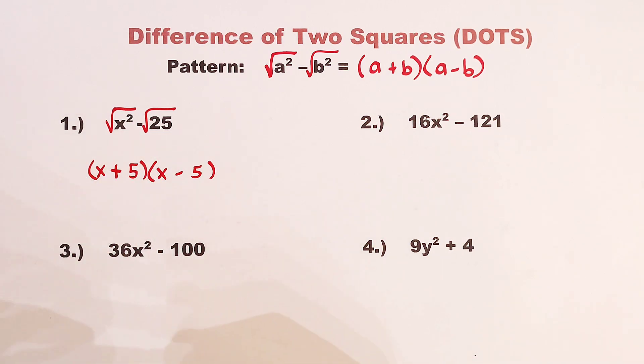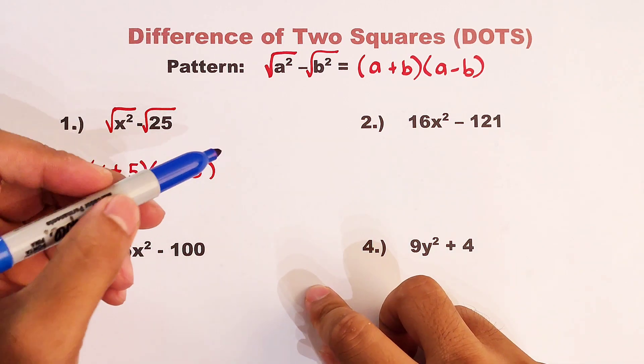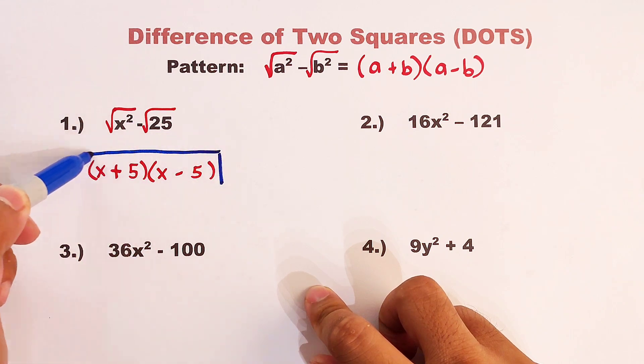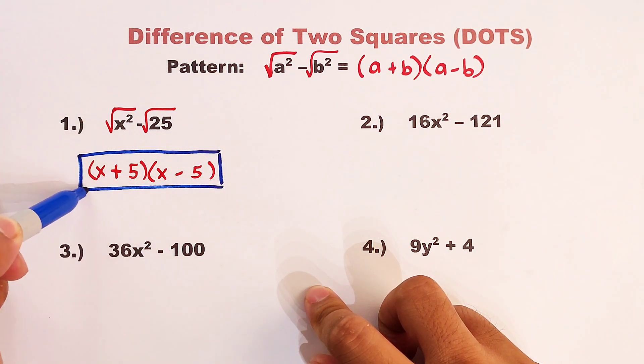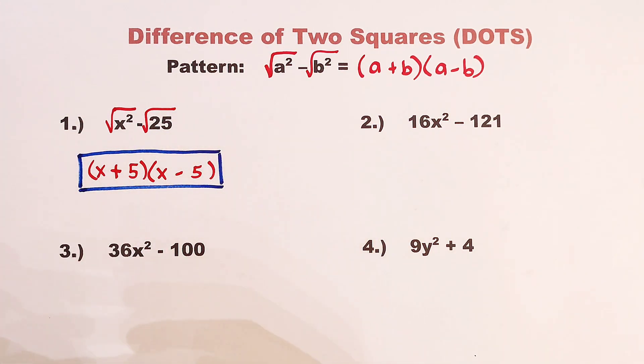So the factors now are x plus 5 times x minus 5. As simple as that.